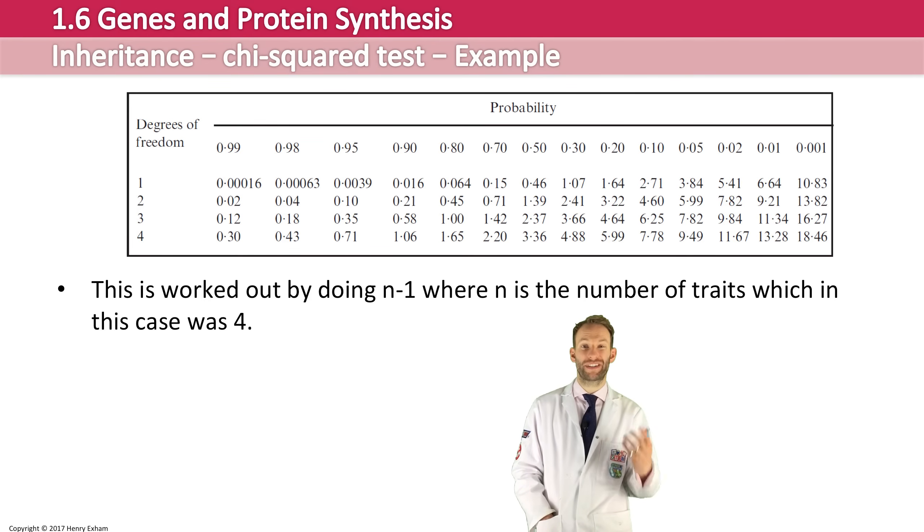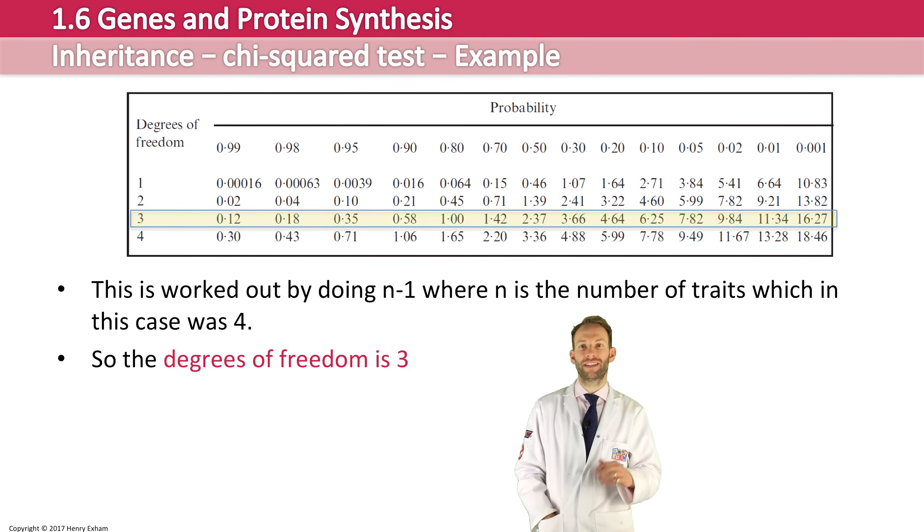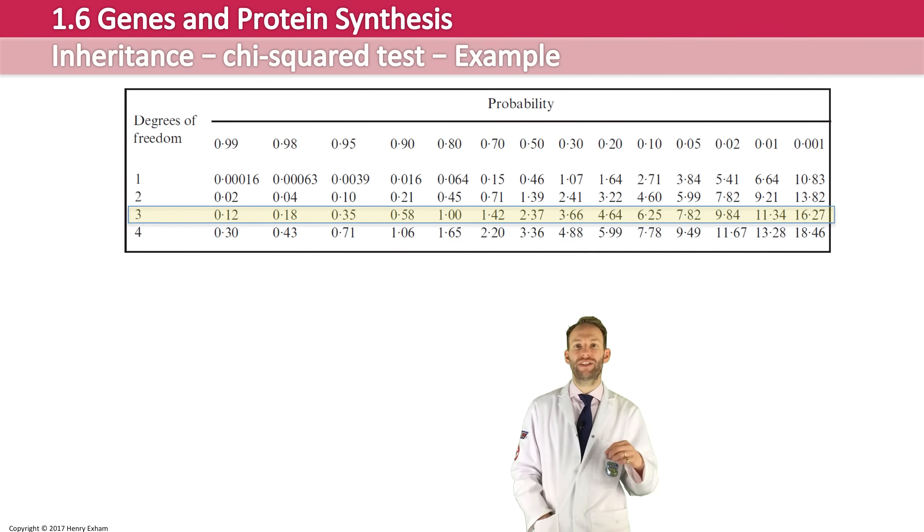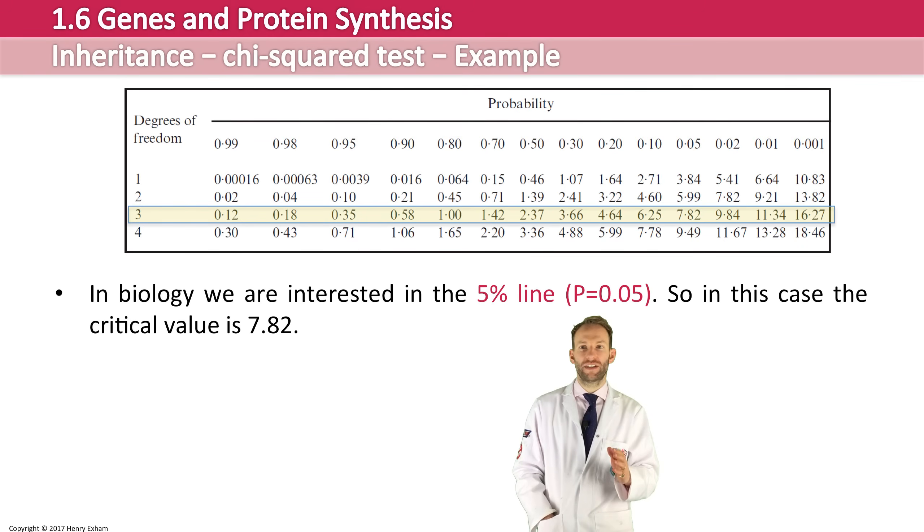And therefore, our n minus 1, our degree of freedom, is 3. So we're going to look at along that line there, which is highlighted. Then we need to look at which column we're interested in, which probability are we actually interested in here. Now, in biology, we're interested in the 5% line. That's sort of our cutoff.